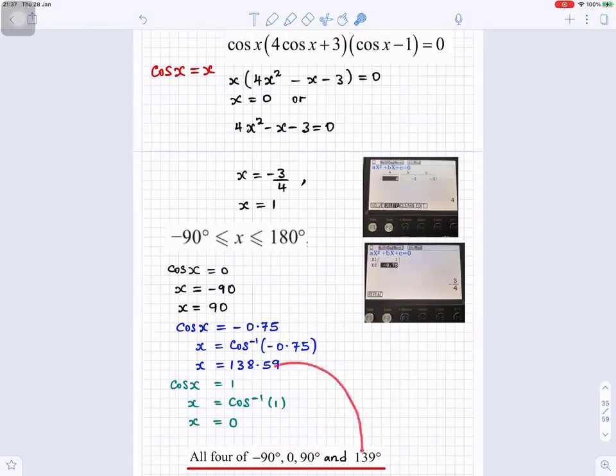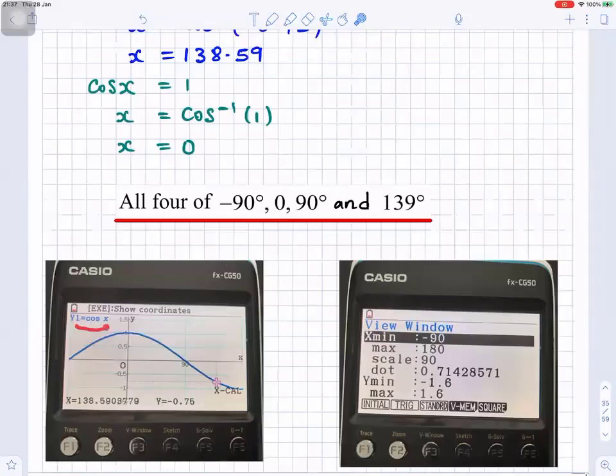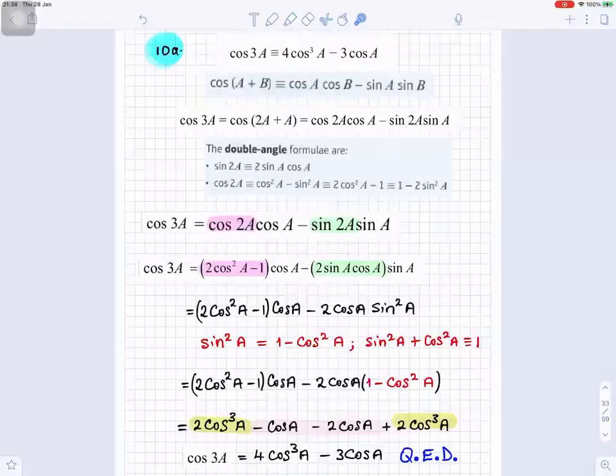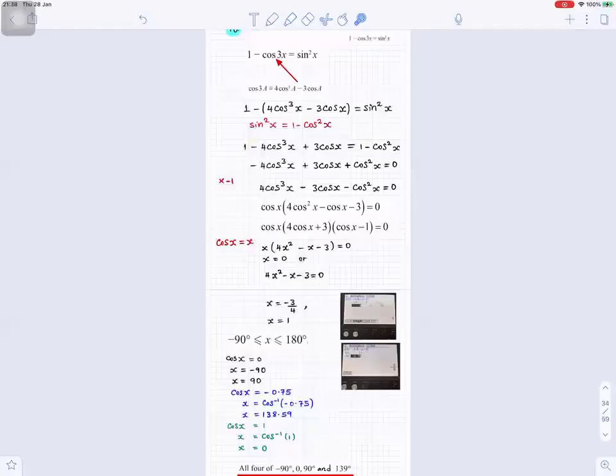When you round 138.59, you get 139. And if you plot your graph of y equals cosx, when x is 138.59, y is minus 0.75. You can see there. And you can use this for the view window to change the x and y values. So, that's your answer for question 10a and that's your answer for question 10b.